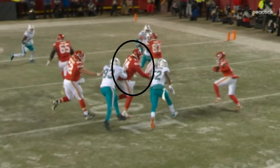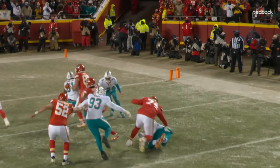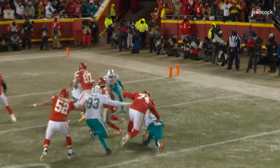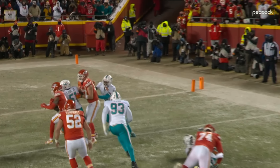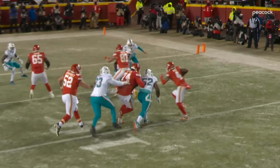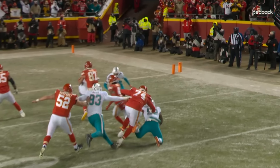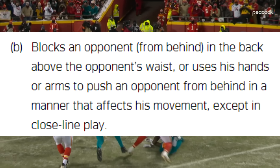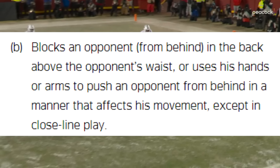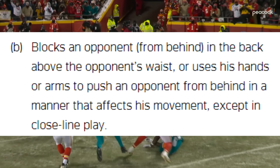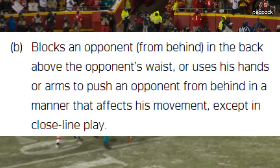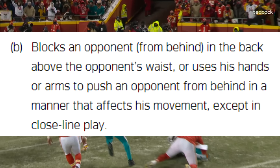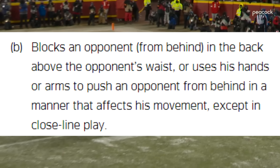But looking at it, you can see that there's another block happening first. Look at 93 for Miami — watch as he pushes Taylor into the Miami defender, who then falls over. It's hard to really blame Taylor for that. I looked in the rule book and there doesn't seem to be an actual exemption written in the rules, but common sense states this should not be a penalty if you get pushed into another defender. The rule defines an illegal block as blocking an opponent from behind above the waist, or using hands or arms to push an opponent from behind in a manner that affects his movement. I think it was just a missed call.